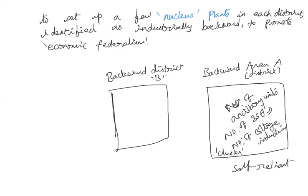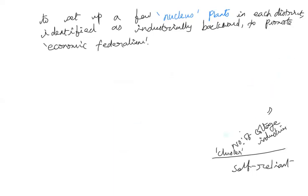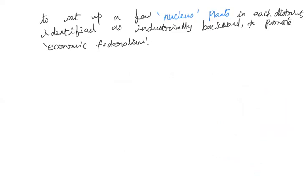Similarly, after backward district A, the same nucleus plants will be set up in backward district B. Nucleus plants means several units of ancillary, small-scale, and cottage industries established in one particular backward district. Over a period of time, they become self-reliant, and all their needs are met within that district without depending outside. This leads to economic federalism — each district becomes independently self-reliant. That is the second feature of the 1980 policy.